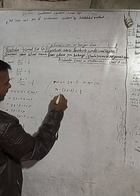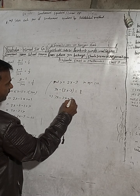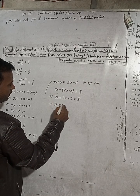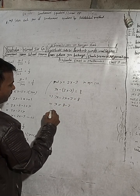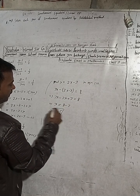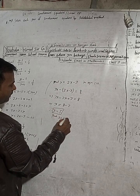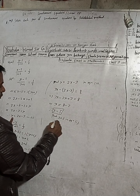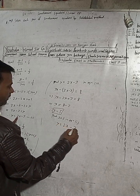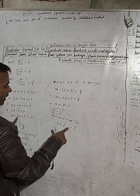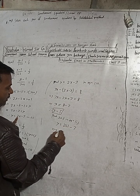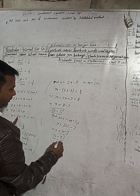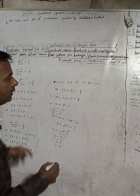This implies 3x minus 2x, and minus times minus gives plus 3, is equal to 8. So x is equal to 5. Now put x equal to 5 in equation 1: y is equal to 2x minus 3, so y equals 2 into 5 minus 3, which is 10 minus 3. Therefore y is equal to 7. Therefore our answer is x equal to 5 and y equal to 7, or the solution is (5, 7).